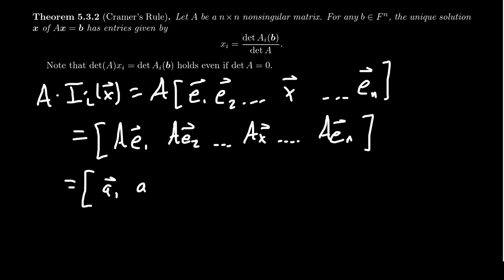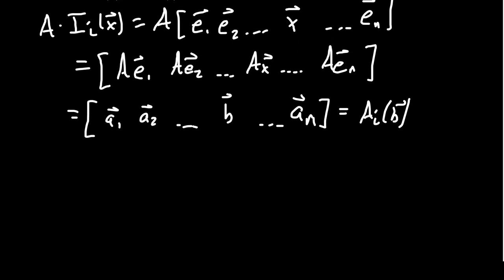So this product will look like: its first column is A·e_1, its second column is A·e_2, its i-th column will be A·x, and its last column will be A·e_n. One important thing about the vectors e_i: if you take a matrix and times it by a column of the identity, if you times A by the i-th column of the identity, this gives you the i-th column of A. So A·e_1 gives us the first column of A, A·e_2 gives the second column of A, and this continues. The last one will be the n-th column of A. All of these reproduce columns of A except the i-th position, which is A·x, and A·x equals b. So this right here is the matrix A_i(b).